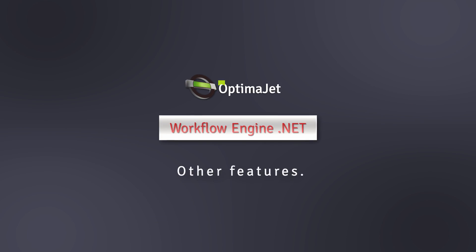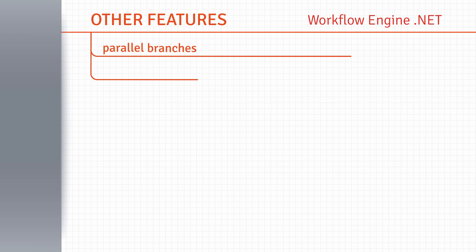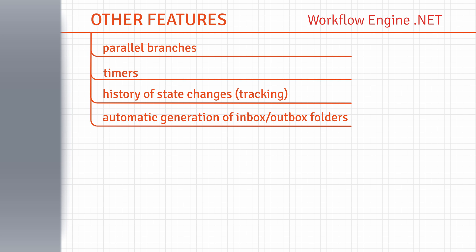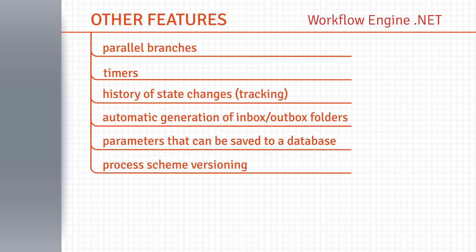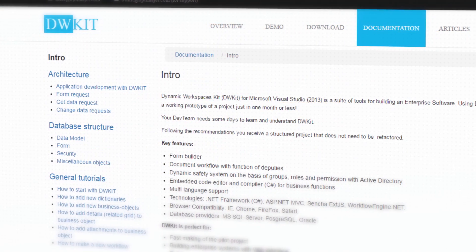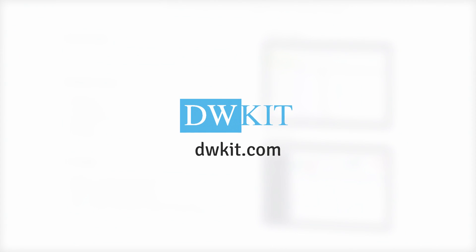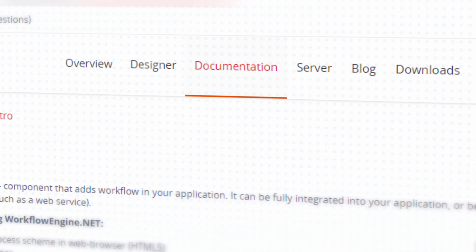WorkflowEngine.net also contains a number of other functions: parallel branches, timers, history of state changes, tracking, automatic generation of inbox-outbox folders, parameters that can be saved to a database, process scheme versioning, and more. Our customers frequently ask if we have a form constructor. We do have a form constructor, but not in WorkflowEngine.net — it is included in another product, DWKit, which uses WorkflowEngine.net. You can find additional information in the documentation section of our website or on our blog, which regularly publishes new articles describing how to use WorkflowEngine.net.